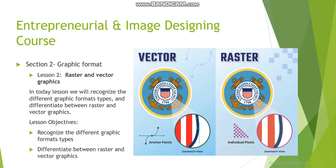In today's lesson you will recognize the different graphic format types and differentiate between raster and vector images. If you take just a look at the picture here, you will see that raster images are produced in a different way than vector. If you get closer to the raster, you will find that they are made up of pixels. If you try to zoom in the image, you can easily figure out the pixels which the image is made up of.